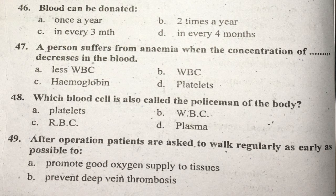Question forty-seven: A person suffering from anemia has decreased concentration of what? In anemia, the concentration of hemoglobin in blood decreases. Right answer is C.